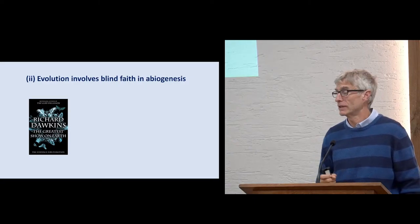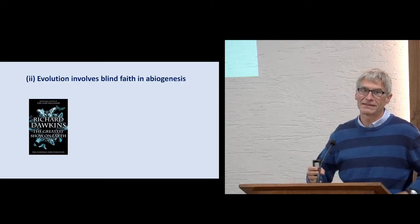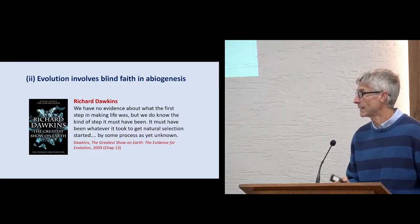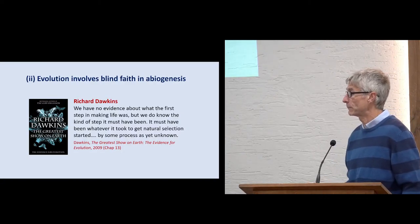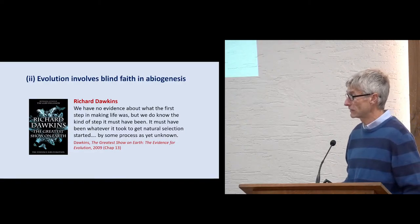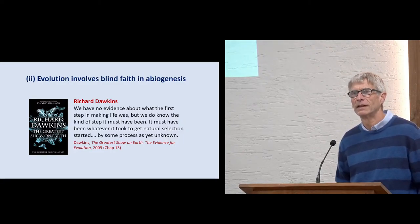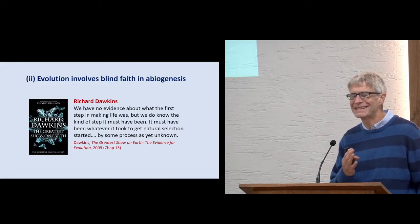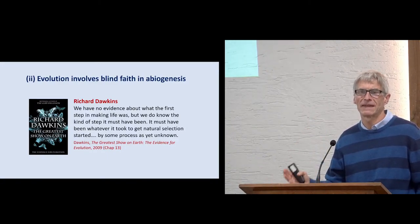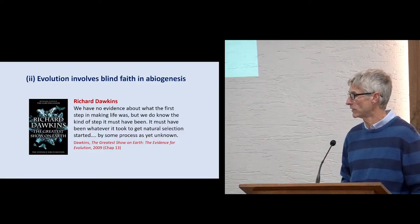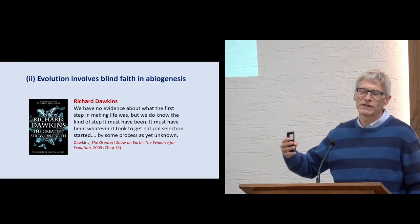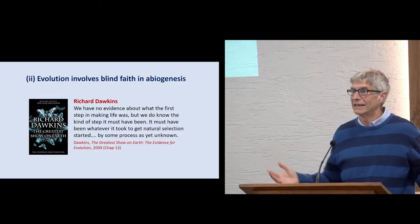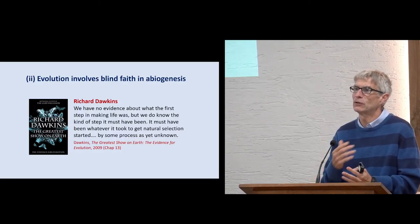But let me just give you a quote from Richard Dawkins. If anyone is enthusiastic about the evidence, he would be. But listen to what he says: we have no evidence about what the first step in making life was, but we do know the kind of step it must have been. It must have been whatever it took to get natural selection started by some process as yet unknown. So he hasn't got a clue. He knows there is no evidence. It's zero, zilch, absolutely nothing. It's blind faith in abiogenesis. And yet, with this kind of arrogance, we do know the kind of step it must have been. Why does he say that? He says it because, well, it's natural selection. His God is evolution. Evolution did it.